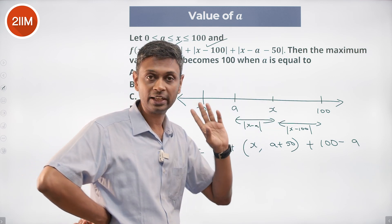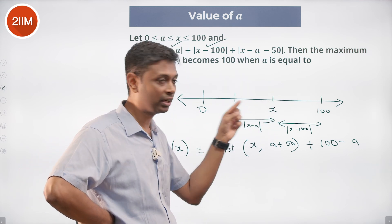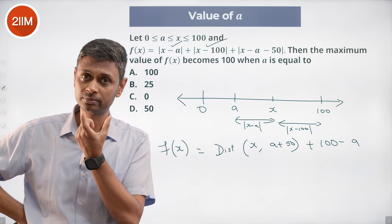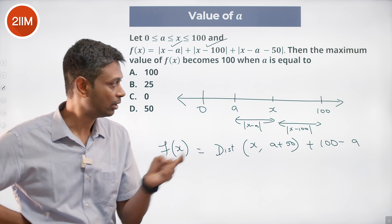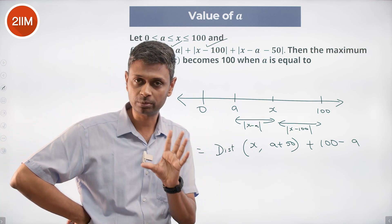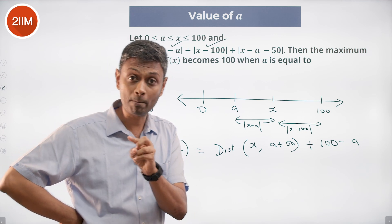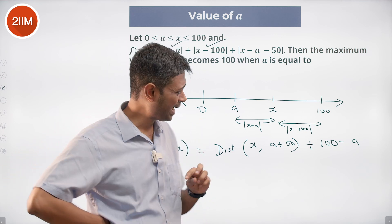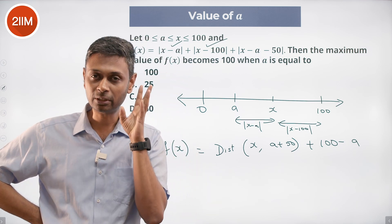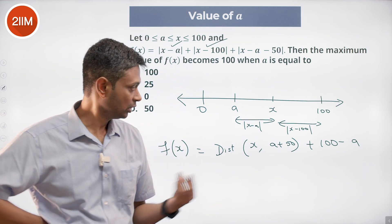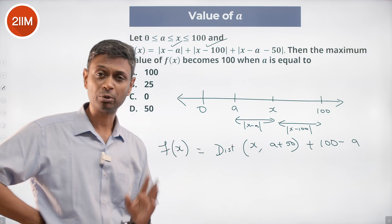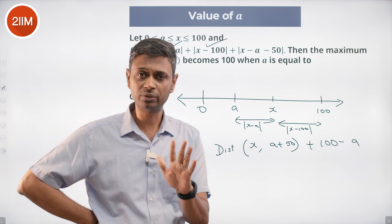If x is less than a plus 50, with x lying between a and a plus 50, then putting x at a gives the maximum distance between x and (a plus 50) as 50. Since x cannot go below a, the maximum possible distance between x and (a plus 50) is 50.